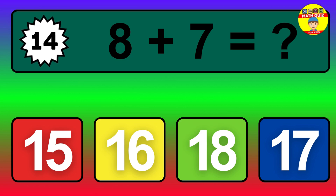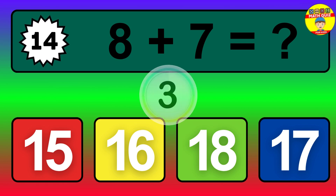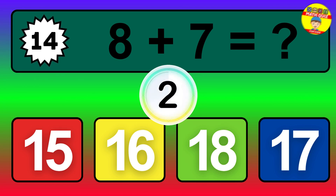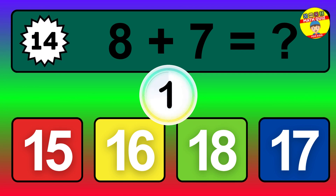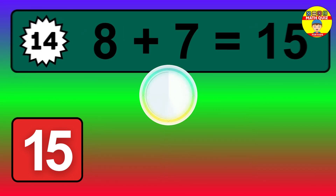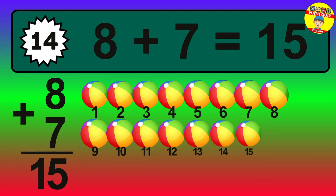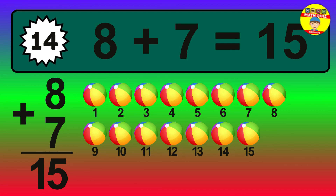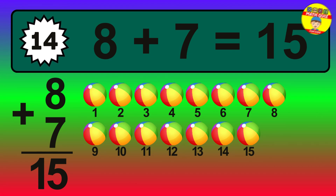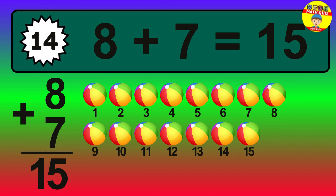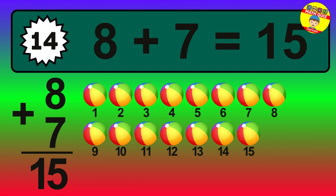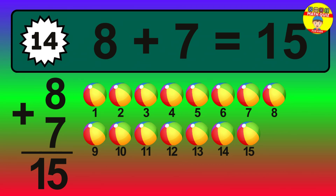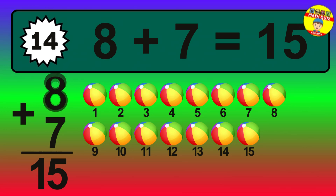Question 14. 8 plus 7 equals what? The answer is 8 plus 7 is 15. Let's count it: 1, 2, 3, 4, 5, 6, 7, 8, 9, 10, 11, 12, 13, 14, 15.